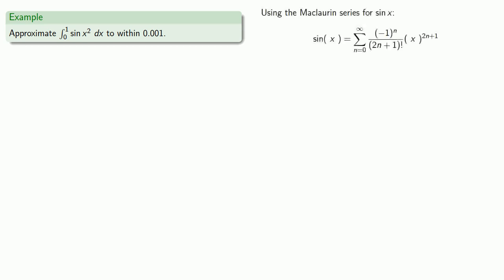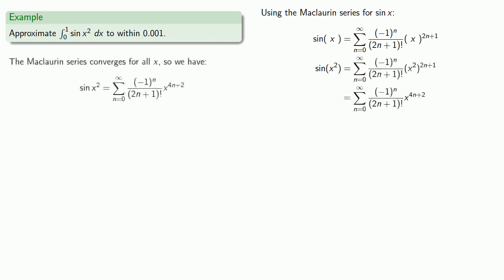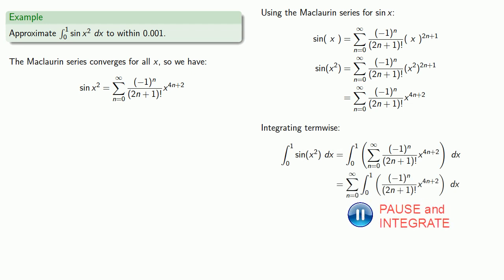We'll replace x with x squared, which gives the Maclaurin series for sine of x squared. Because the Maclaurin series for sine converges for all values of x, then we can integrate term-wise, and then evaluate to get our definite integral expressed as a series.